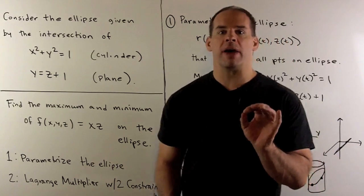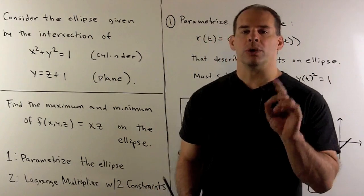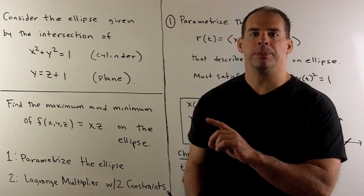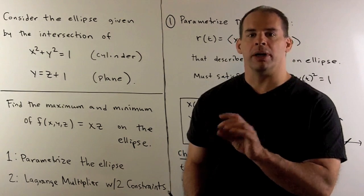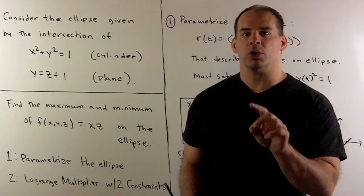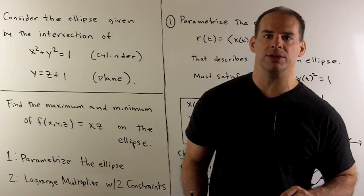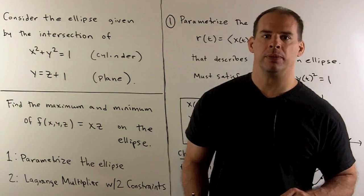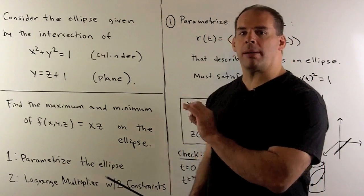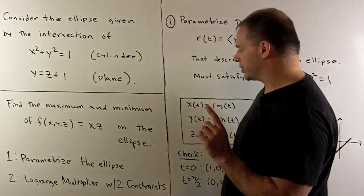We're going to have two methods to solve this problem. In this video, we're going to use the method of parametrizing our ellipse. In the next video, I'm going to use this problem as an example for Lagrange multipliers with two constraints.